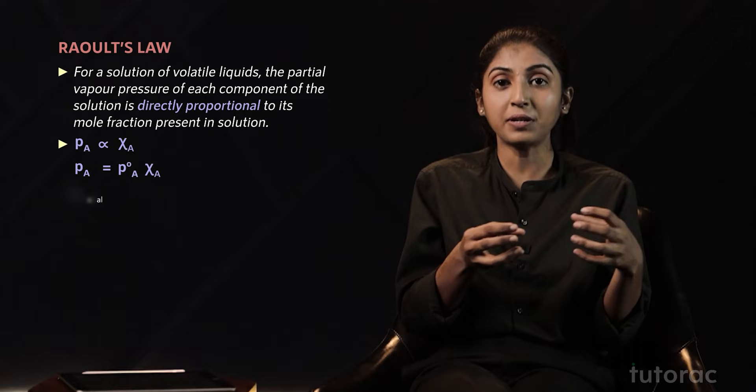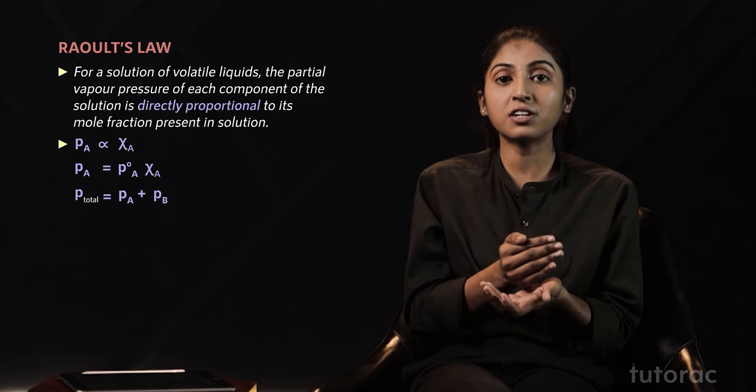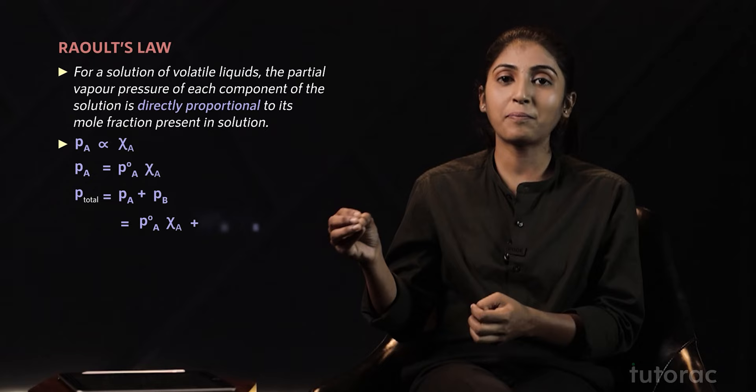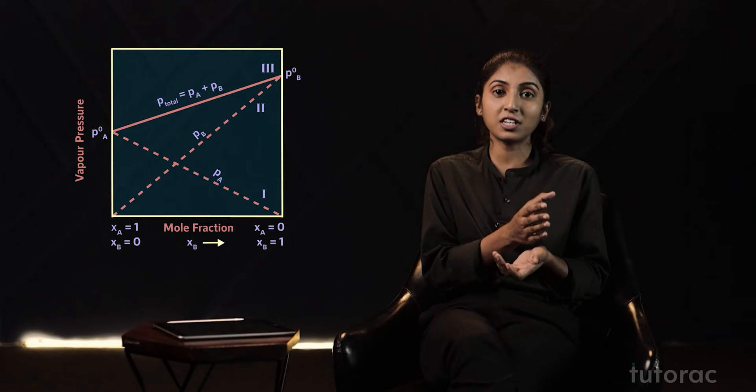In a nutshell, the total vapor pressure of the solution, P_total, equals P_A plus P_B — that is, the partial vapor pressure of component A plus the partial vapor pressure of component B. So P_total can be written as P°_A χ_A plus P°_B χ_B.